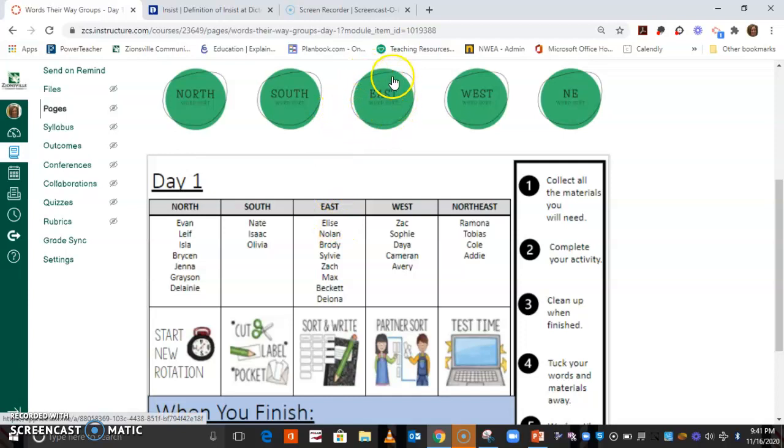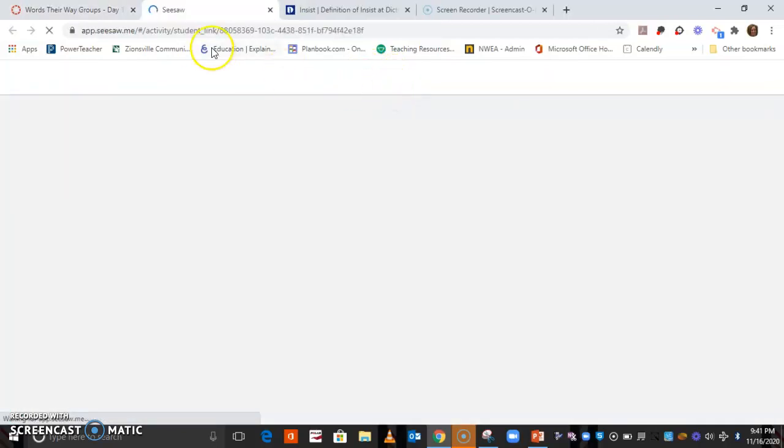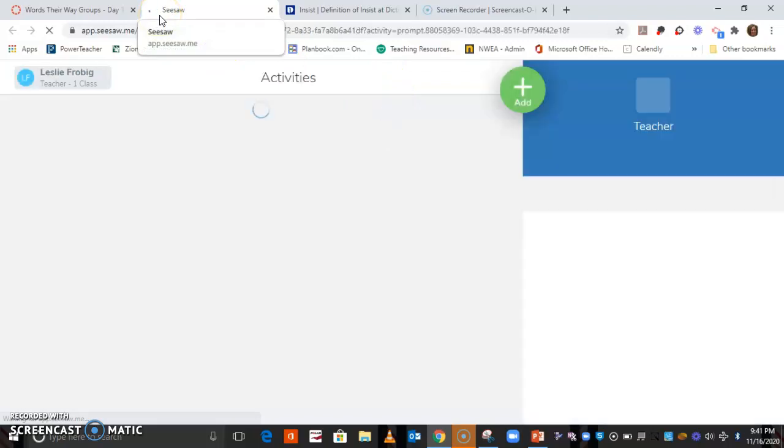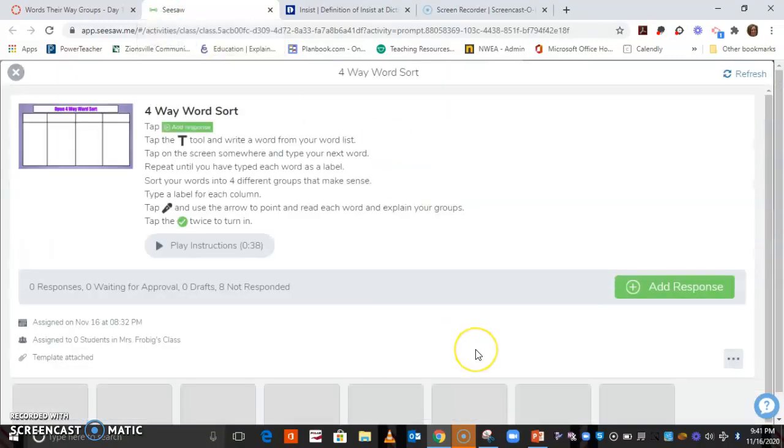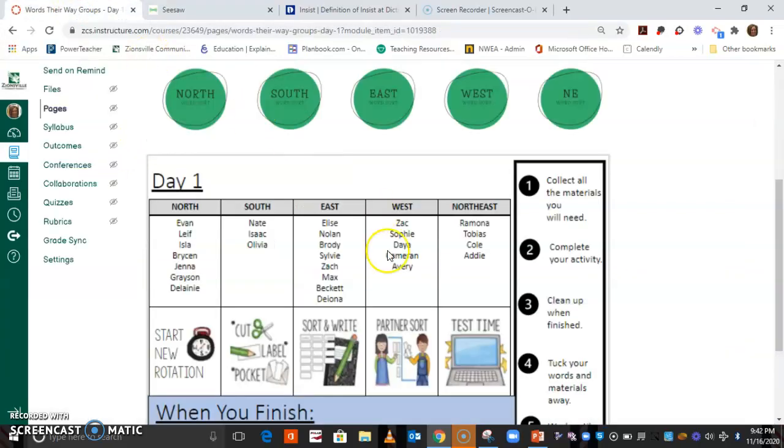You're going to click on this green circle here, and when we click on it, you're going to see a Seesaw lesson. Now you should have received a QR code that you can use to scan to get into Seesaw. And when you get to your assignment, you're going to click this plus for add a response. All your directions are right here if you need them, but this is your way of doing your sort and write on the computer. Now, if it gets too messy and it just is not making sense, please don't worry about it. Go ahead and do your write and sort the way that we have been doing, in the back of your writing notebook.